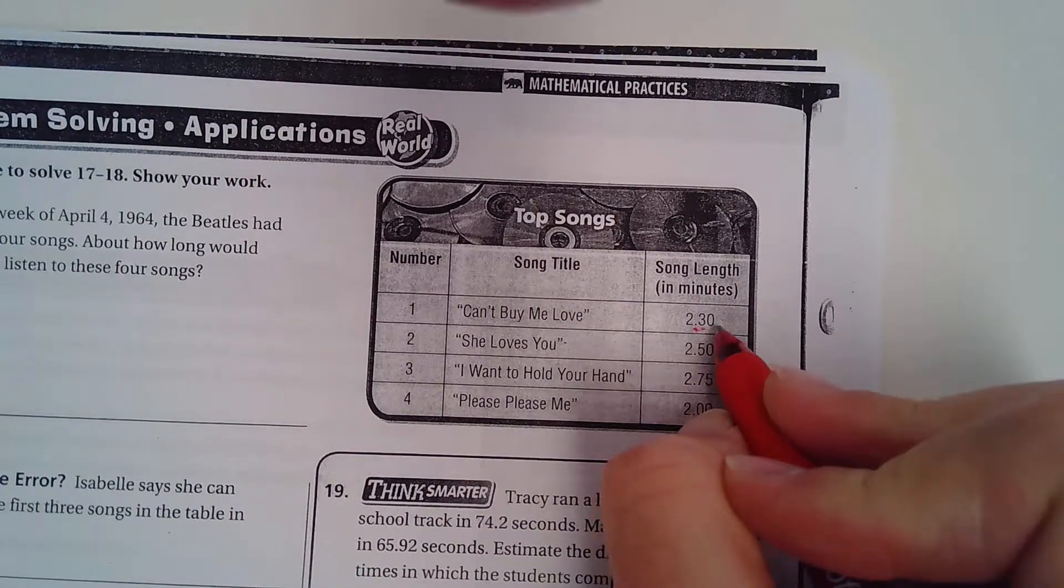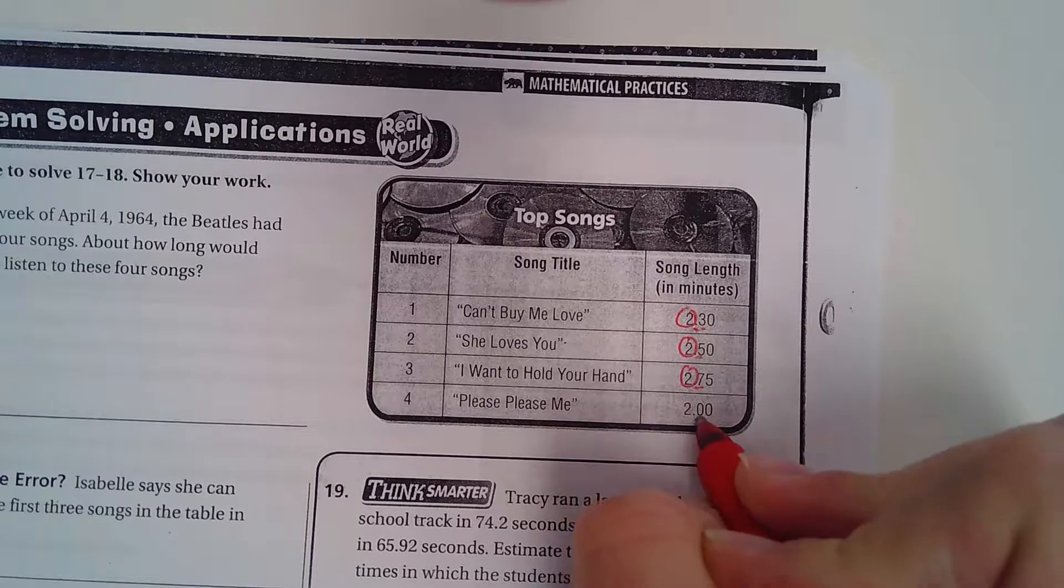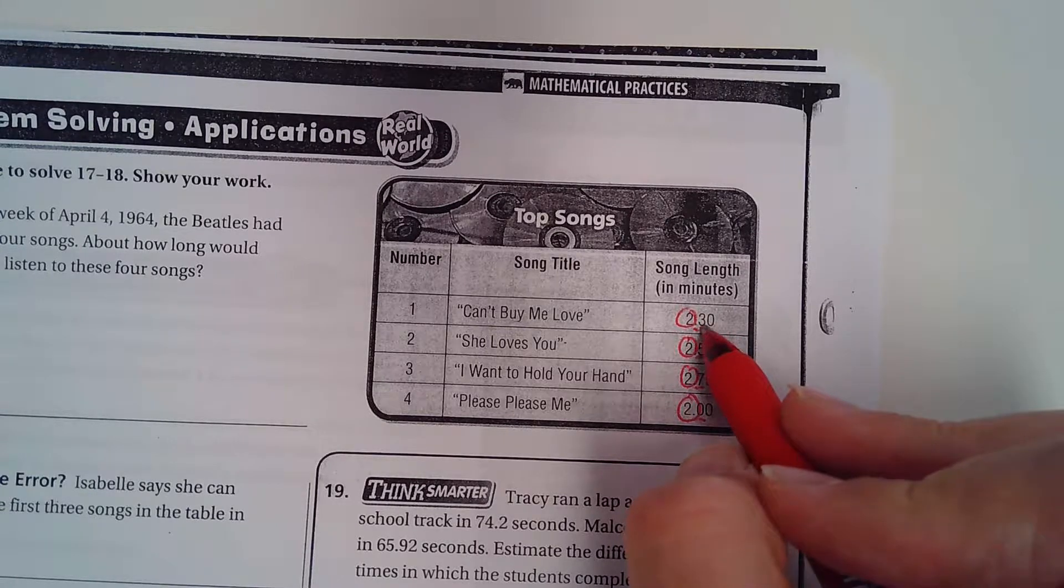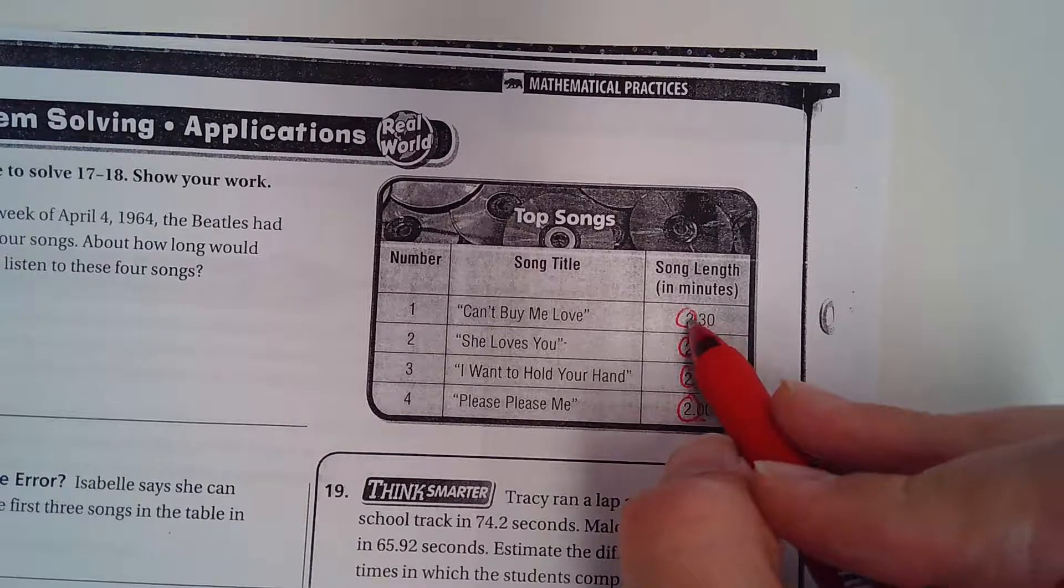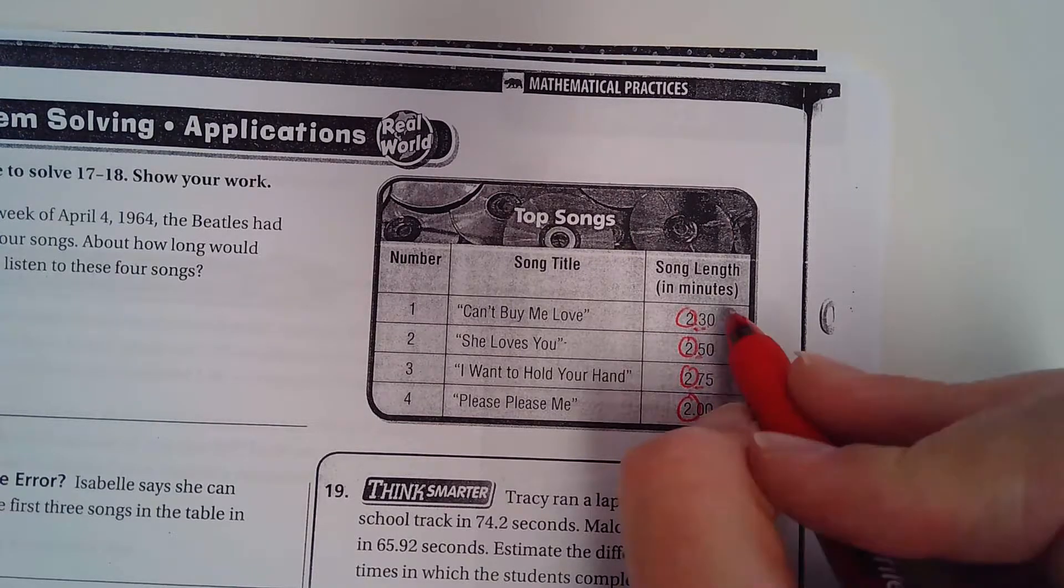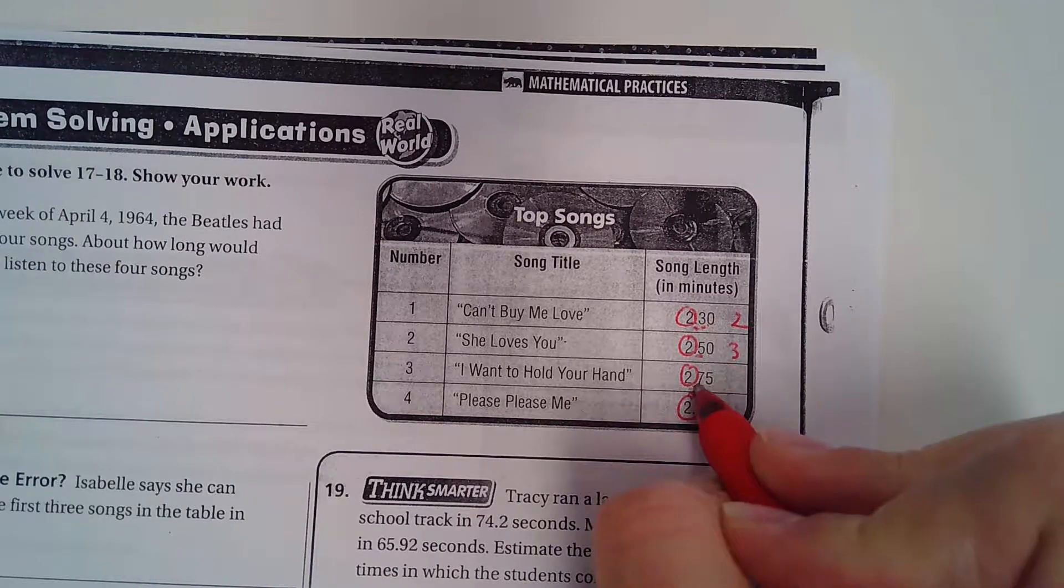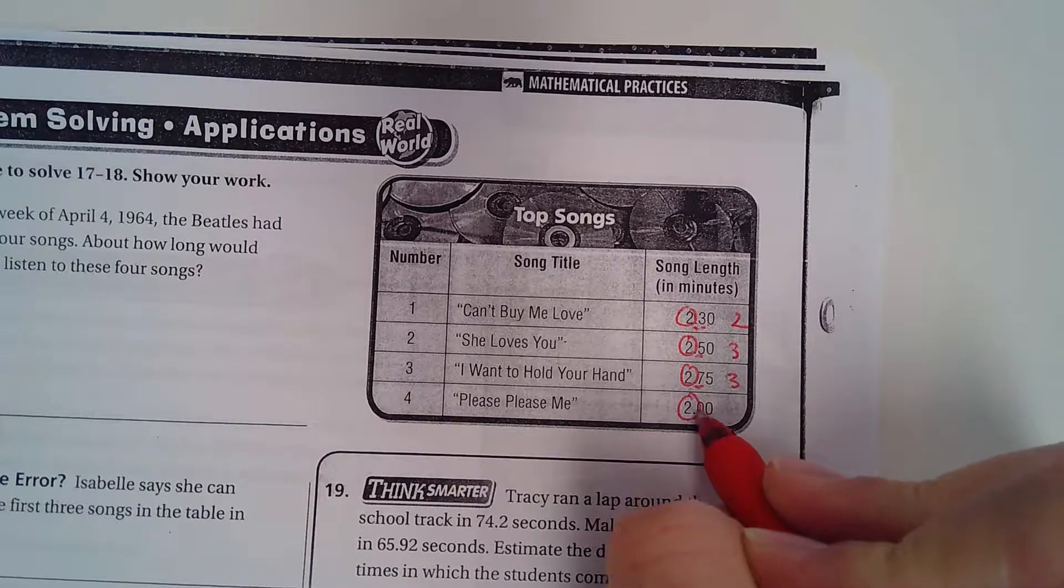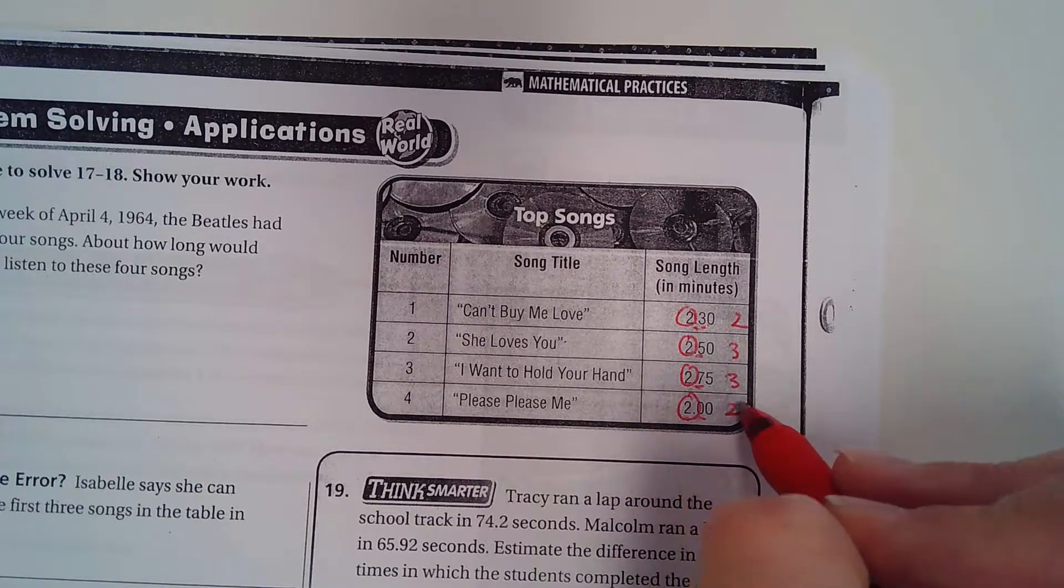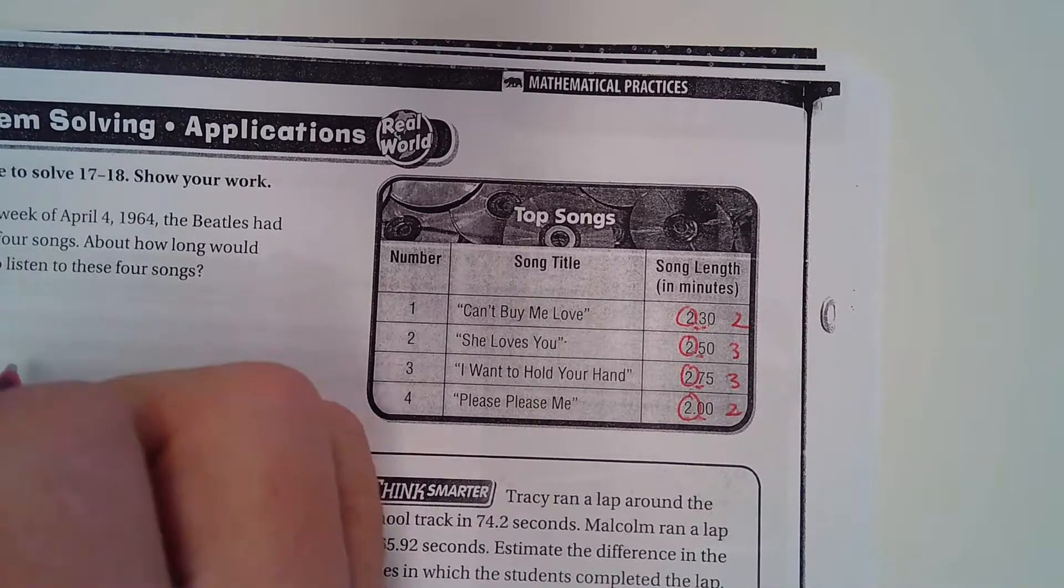Underline that, circle that, underline that, circle that. Okay, 2.3 - does the three determine? I mean it does determine. Is the two going to become a three? Well, it stays a two. This is five or larger, so that becomes a three. This is five or larger, so it becomes a three, and the zero stays the same. So what do we got here? Six, seven, eight, nine, ten. So about...